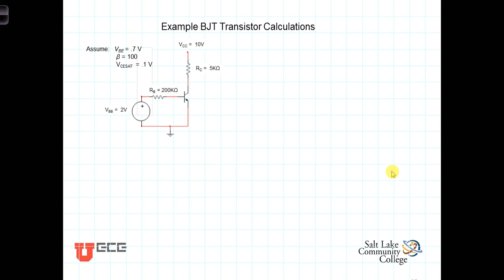In this example, we're going to analyze this circuit. It's got a BJT transistor in it and demonstrate the kinds of calculations that you go through, first of all, to determine the state or the region in which the transistor is acting — whether it's in the cutoff region, the active or linear region, or the saturation region.